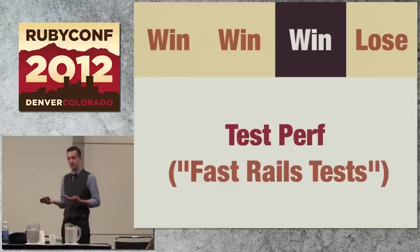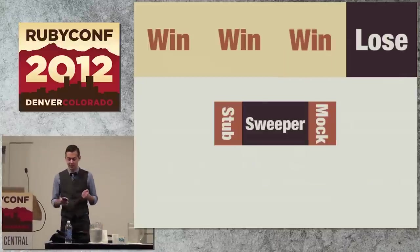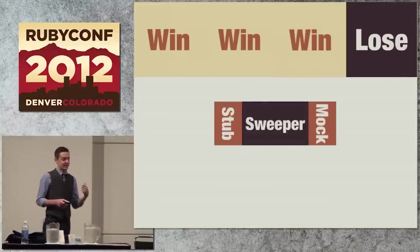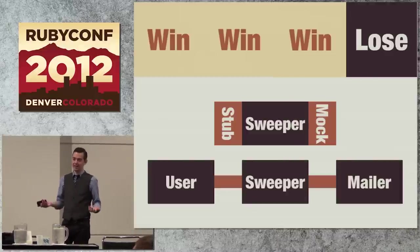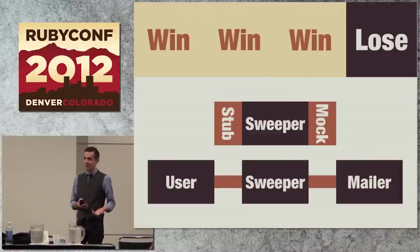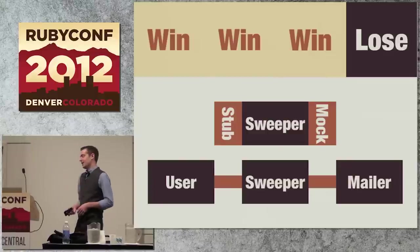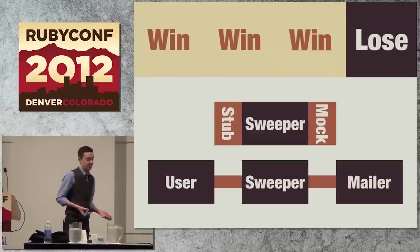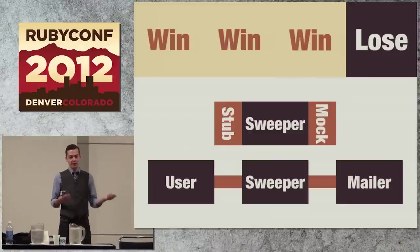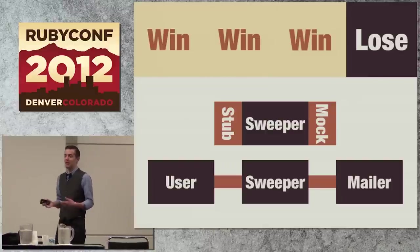But they are balanced out by a very bad thing. And that bad thing is that in test, you're running against a mock and a stub, and in production, you're running against real classes. And if you don't stub the boundary correctly, your test will pass, and your production system will be wrong. And this is such a big problem that for most people, I think, it overshadows all those benefits.